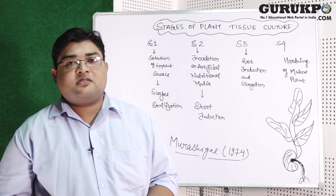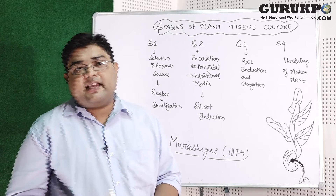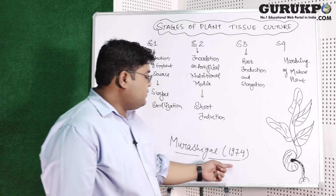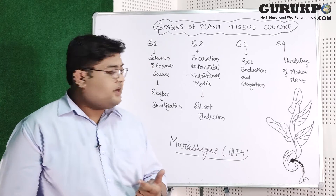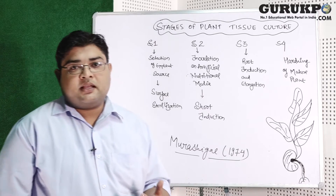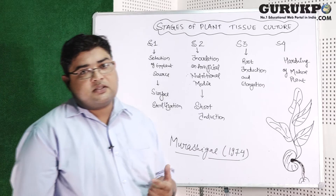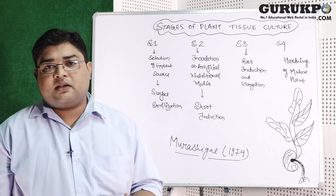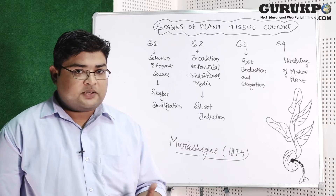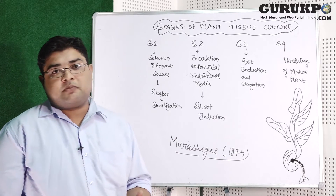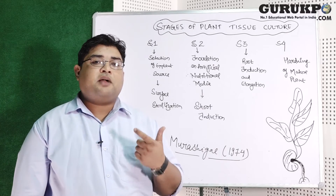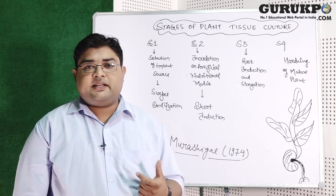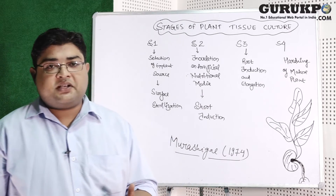Plant tissue culture is a technique, and each technique has stages to be carried out. In 1974, scientist Murashige discovered that plant tissue culture has four major stages. The first stage includes the selection of the mother plant from which we take the explant. The second is sterilization of the explant, because plants grow in natural environments containing several viruses, fungi, bacteria, and their spores as contaminant agents.